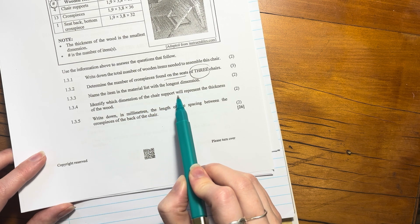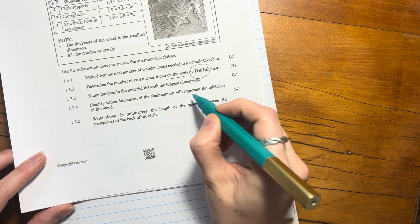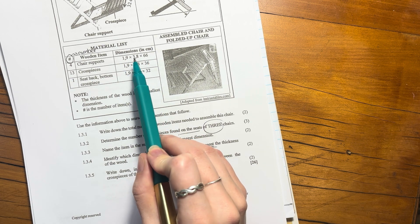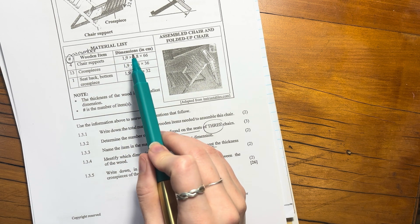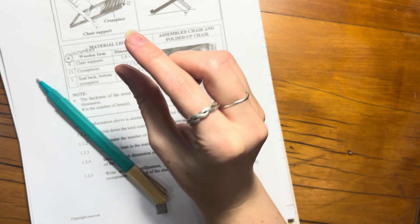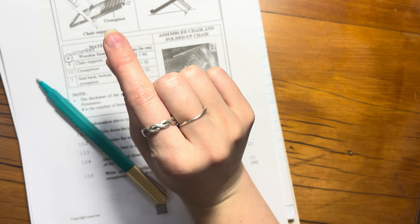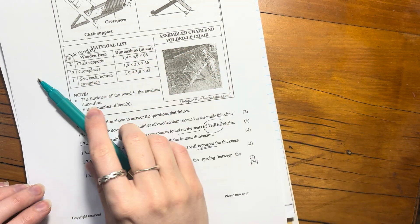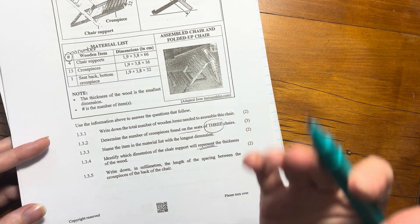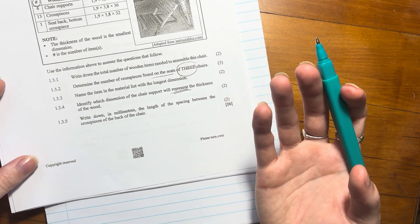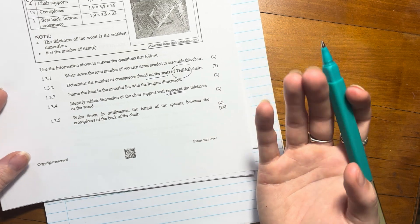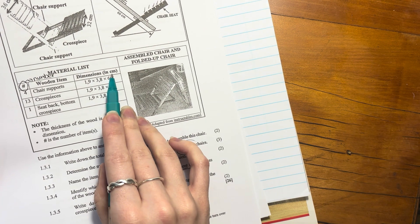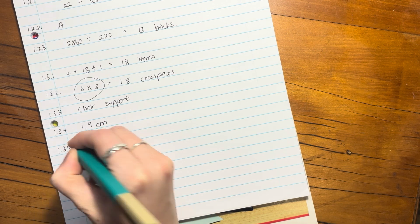Identify which dimension of the chair support will represent the thickness of the wood. So there's the chair support. And here's the dimension. So generally the thickness of the wood is going to be your smallest dimension. So thickness is like this. Then you're going to have the width like that, and then you're going to have the length across. So the thickness is generally going to be the smallest. Kind of makes sense because it's the same across. So I'm going to say 1.9 cm. So that's just like a common knowledge. It's just because the thickness is generally the lowest dimension when it comes to planks of wood. So just something to admit there. 1.9. And don't just say 1.9. You have to say the measurement. Centimeters.